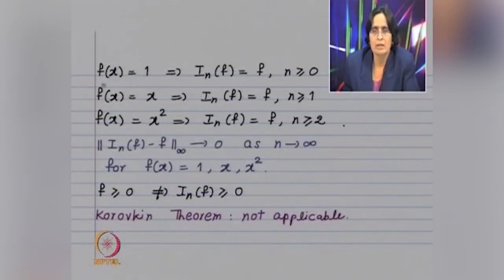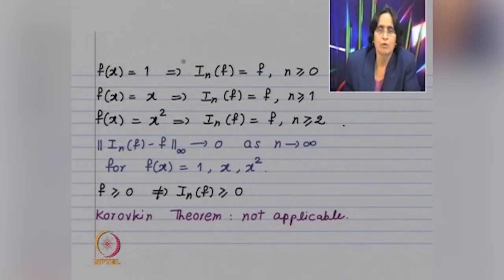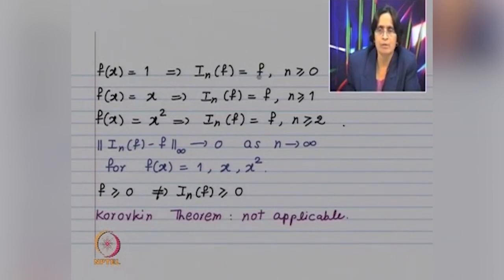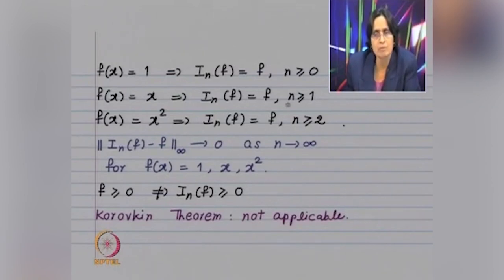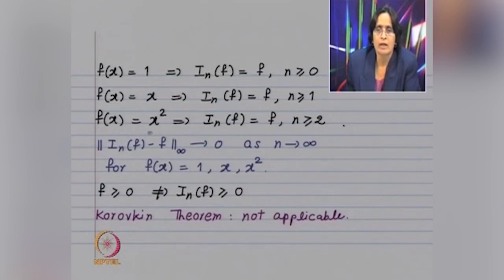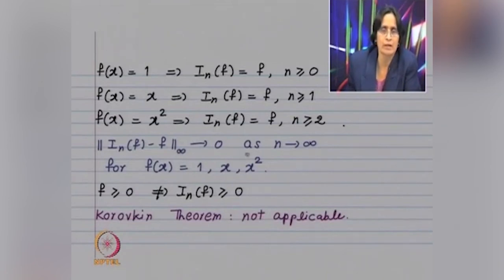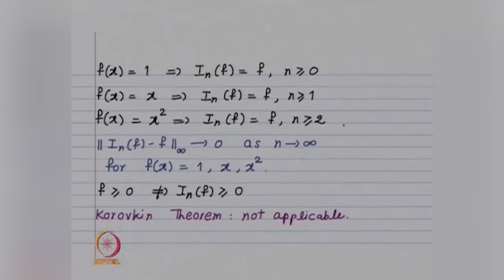Now look at the three functions: f(x) = 1, f(x) = x, and f(x) = x². Since interpolating polynomials reproduce polynomials, when f(x) = 1, the interpolating polynomial equals f for n ≥ 0. For f(x) = x, Iₙ(f) = f for n ≥ 1. For f(x) = x², Iₙ(f) = f for n ≥ 2. Hence, for these three functions, the infinity norm of Iₙ(f) − f tends to 0 as n tends to infinity.